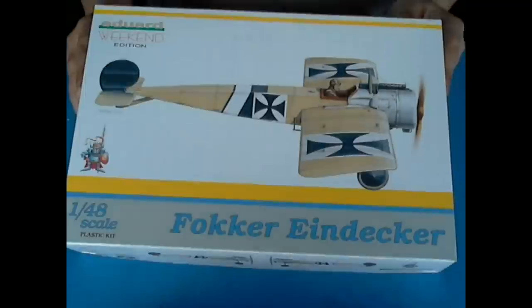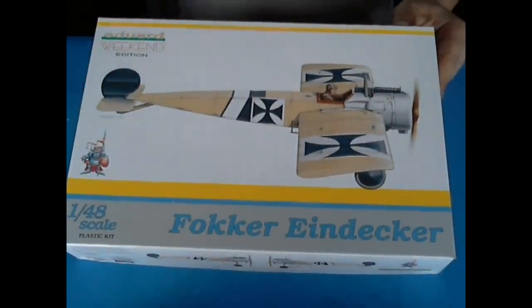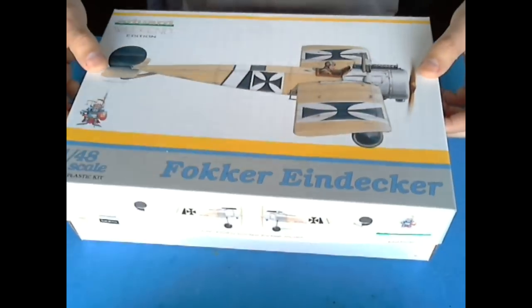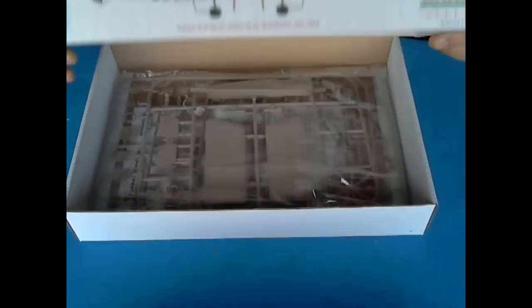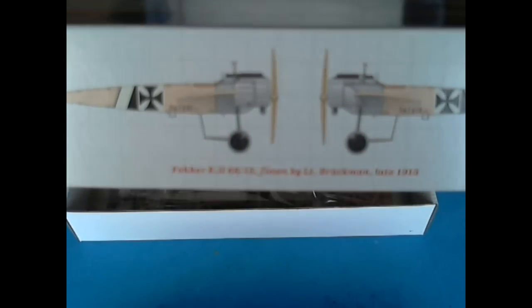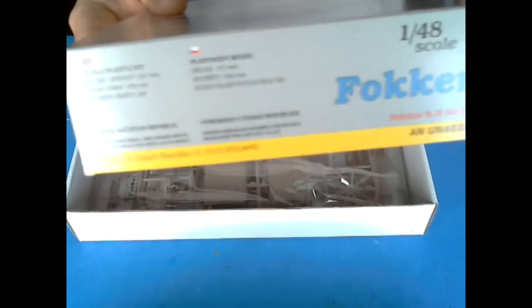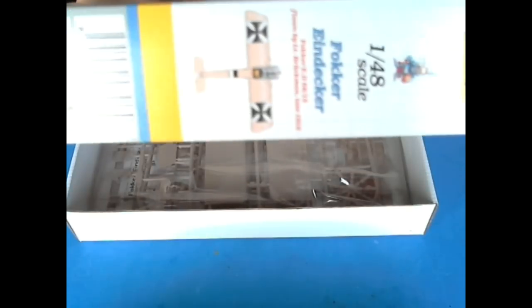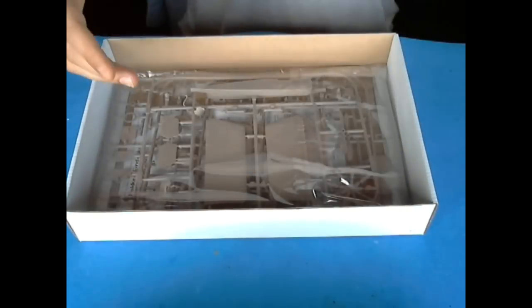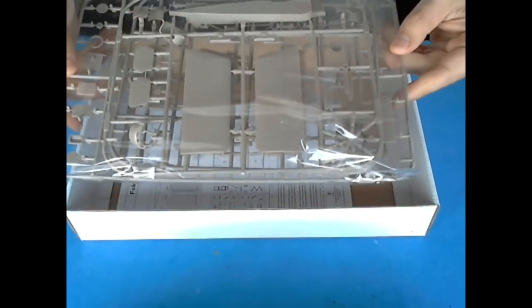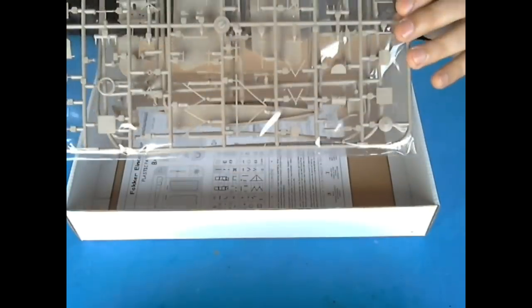Let's see what's in this box. As usual, very good visual references on the plane, on the model itself. One plastic bag with three styrene sprues.